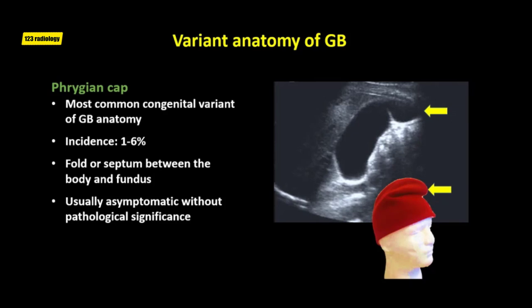The gallbladder can be variable in shape. The Phrygian cap is the most common variant of gallbladder anatomy, occurring in one to six percent of the population. It is named after the headgear worn by ancient Greek slaves as a sign of liberation. This deformity is characterized by a fold or septum between the body and fundus, and is of no clinical significance unless mistaken for a layer of stones or hyperplastic cholecystosis.